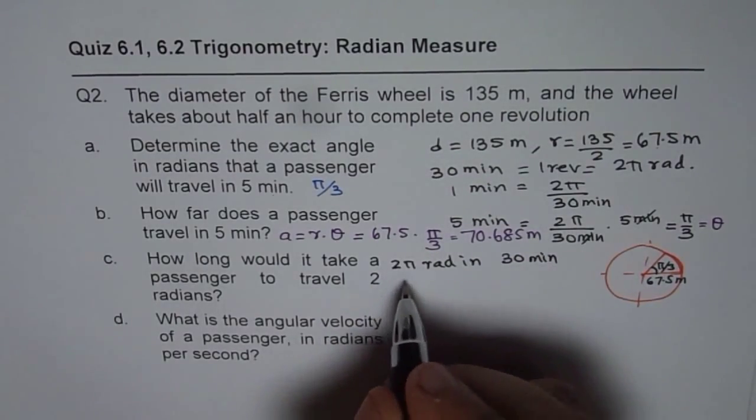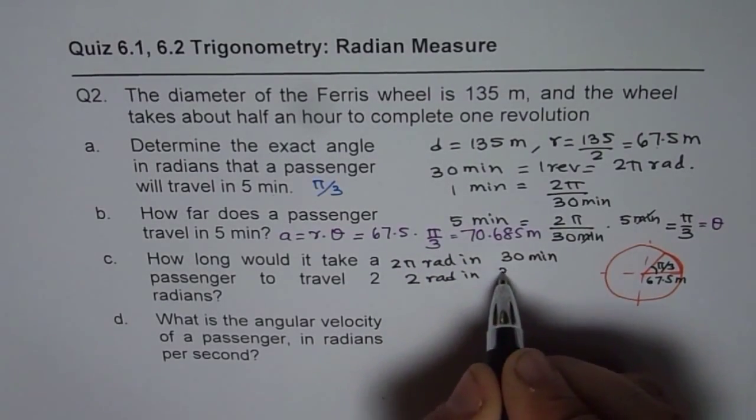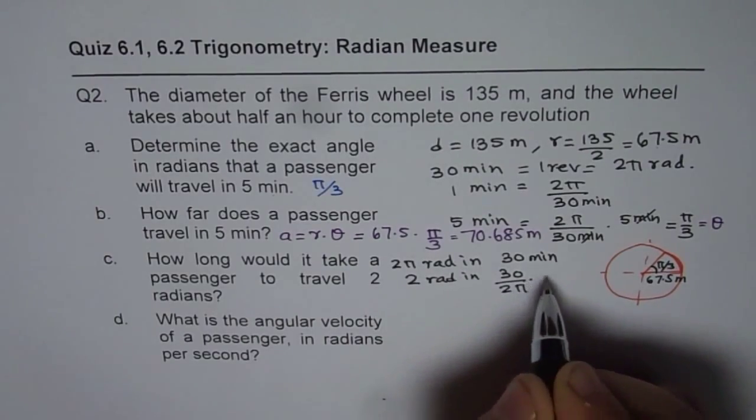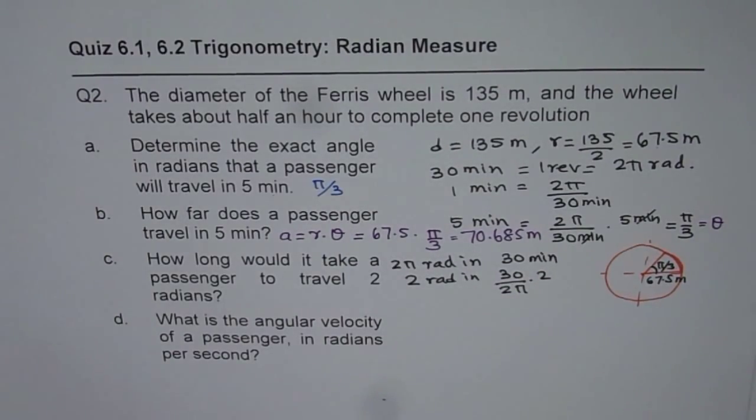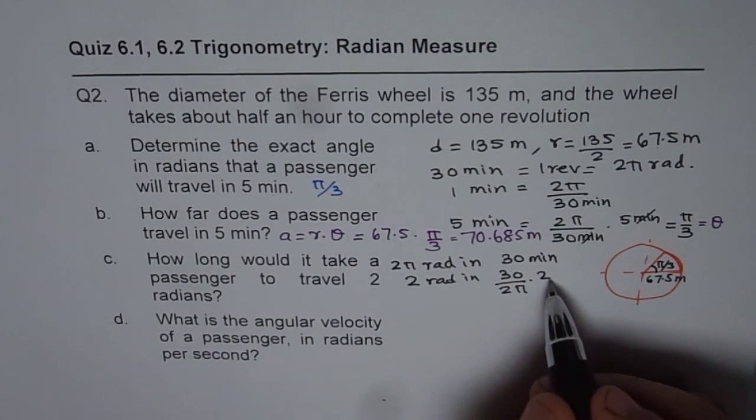So 2 radians in how much time? So 2 radians in 30 divided by 2π times 2. That is how you get it. So many minutes. So 30 divided by π.